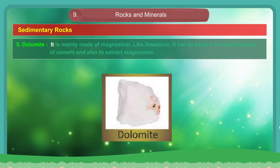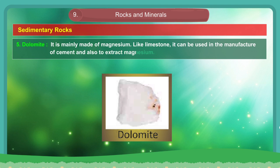5. Dolomite. It is mainly made of magnesium. Like limestone, it can be used in the manufacture of cement and also to extract magnesium.